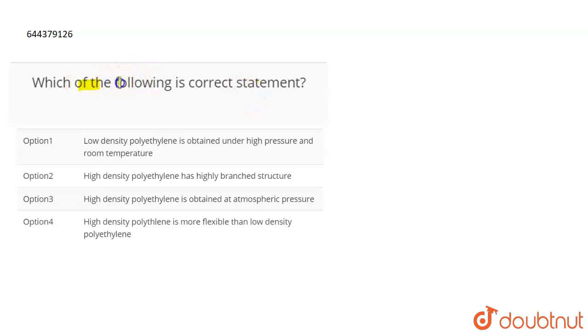The statements are about low density polyethylene and high density polyethylene. Low density polyethylene are basically branched polymers with high flexibility, high elasticity. And if we talk about high density polyethylene, then high density polyethylene are basically the ones where they are rigid and firm and linear polymers, right?